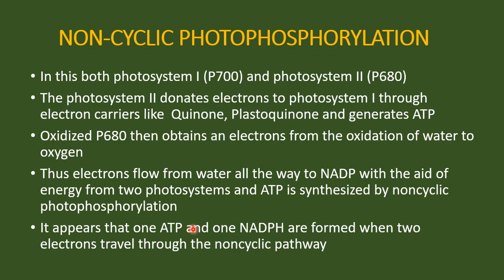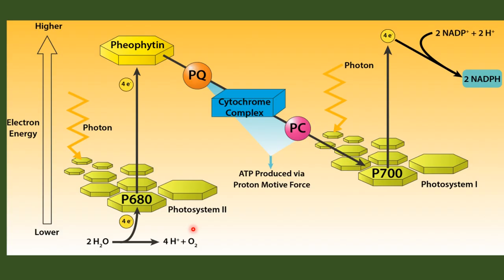Now let's move to the second type: non-cyclic photophosphorylation. In this, both photosystem 1 and photosystem 2 are involved. Remember in cyclic we had only one type, but here both types are involved. The reduction potential of the P680 chlorophyll A molecule of photosystem 2 is very electropositive, slightly more positive than that of the water couple.